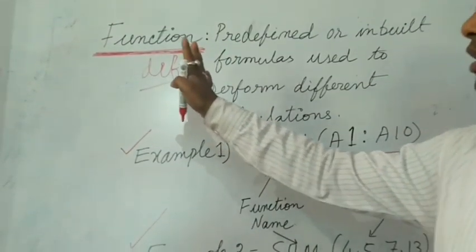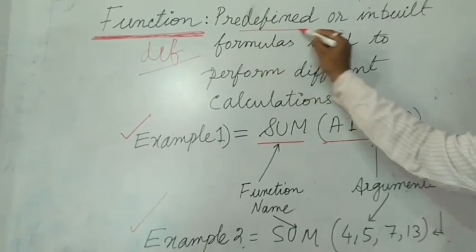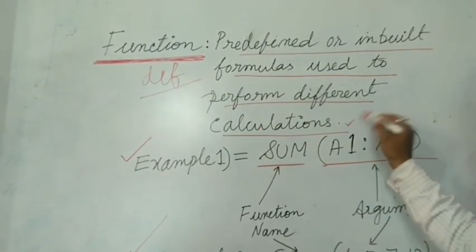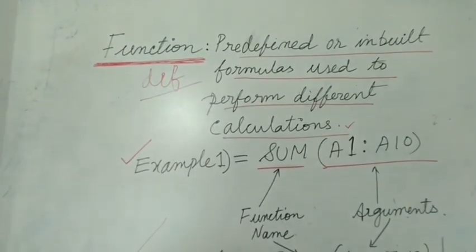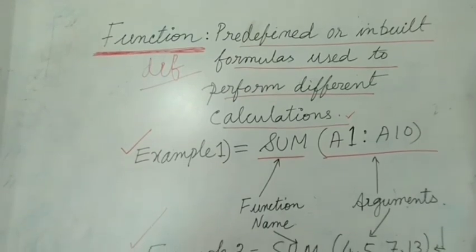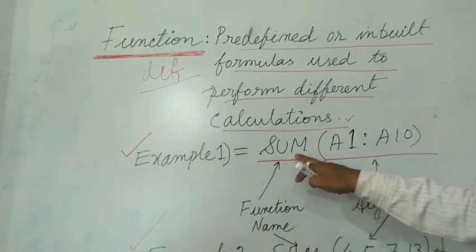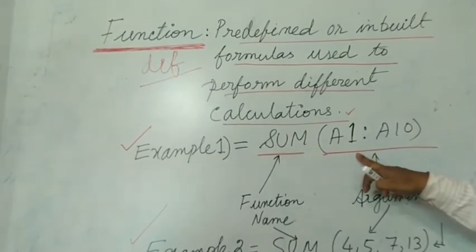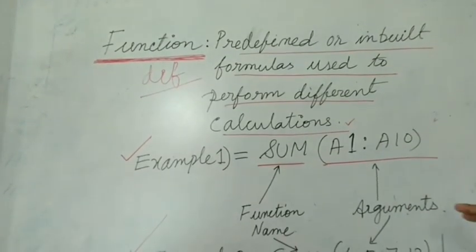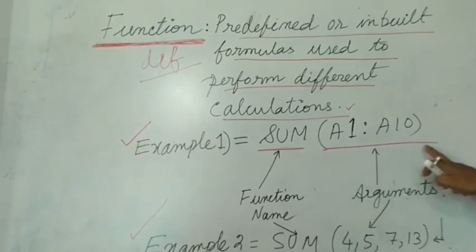The next topic is Functions — one of the most important parts of MS Excel. Functions are predefined or inbuilt formulas used to perform different calculations. Suppose the teacher tells you to find out the class average in each subject — these predefined functions are available; you apply those functions to get the answer. In a function, two parts are present: the function name and the argument part, separated by a bracket.